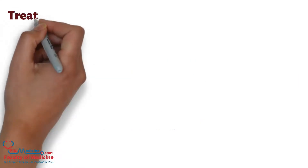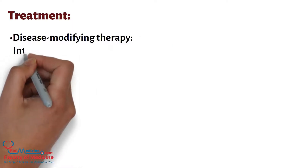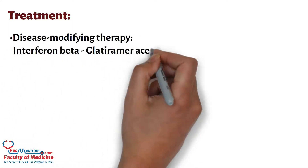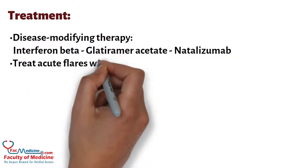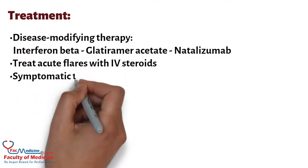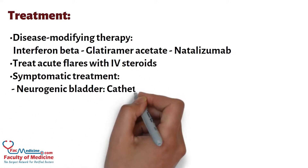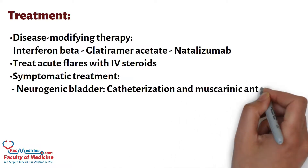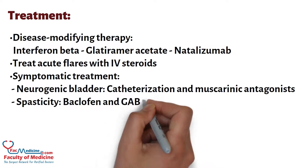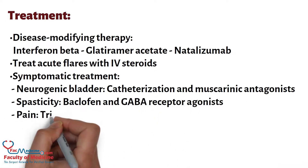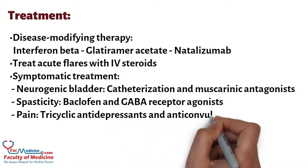Treatment: Disease-modifying therapy includes interferon beta, glatiramer acetate, and natalizumab. Treat acute flares with IV steroids. Symptomatic treatment includes catheterization and muscarinic antagonists for neurogenic bladder, baclofen and GABA receptor agonists for spasticity, and tricyclic antidepressants and anticonvulsants for pain.